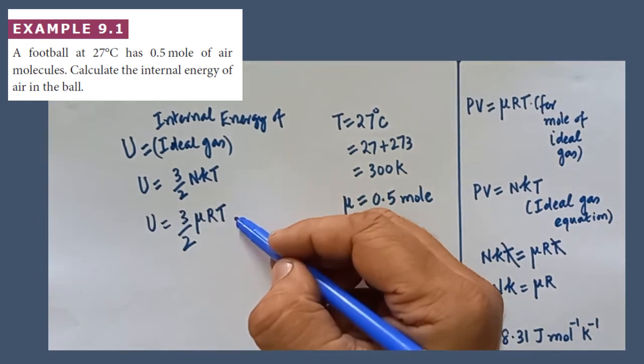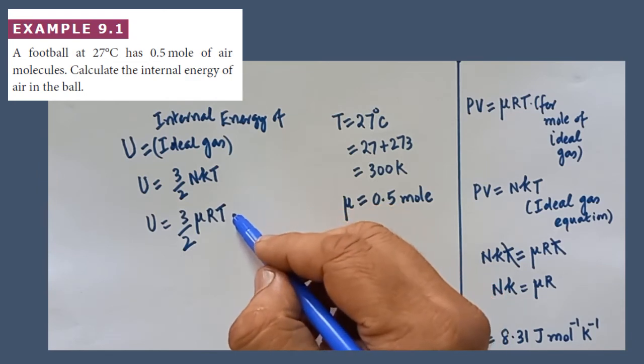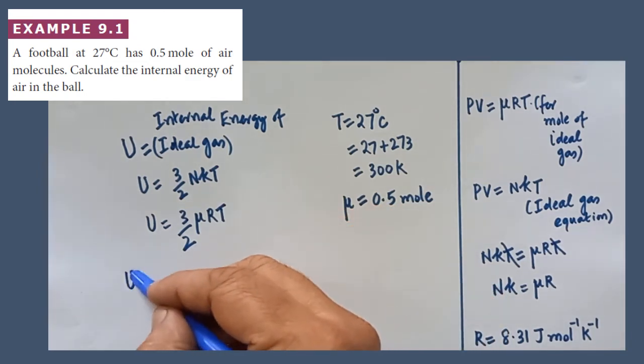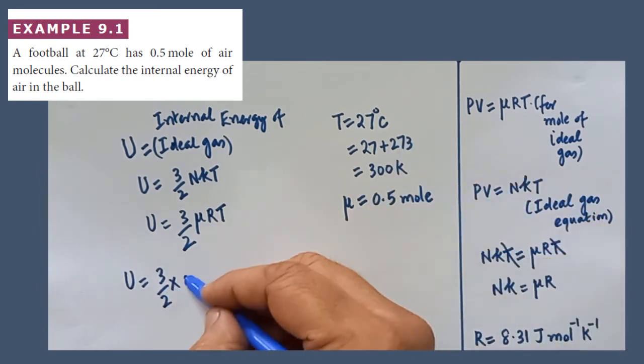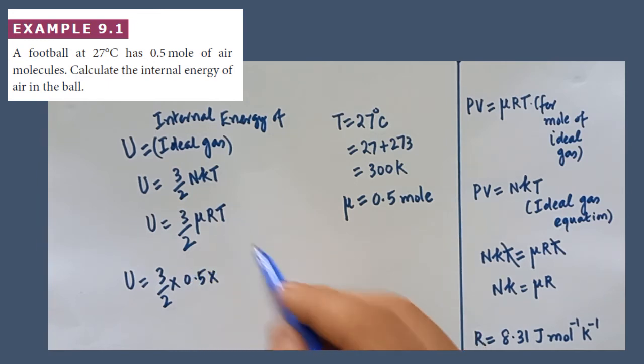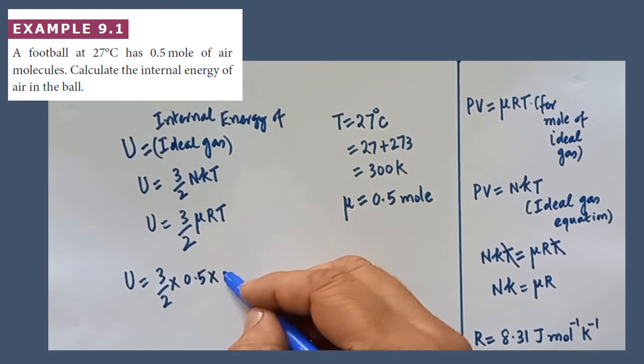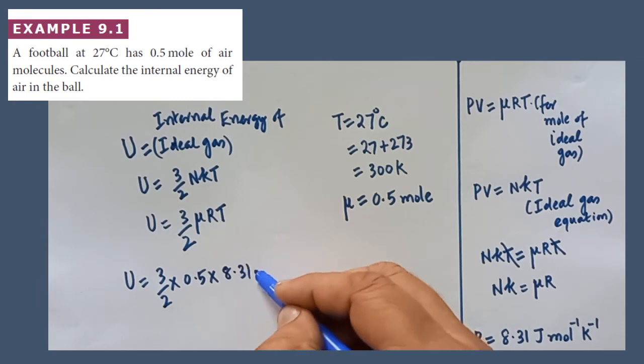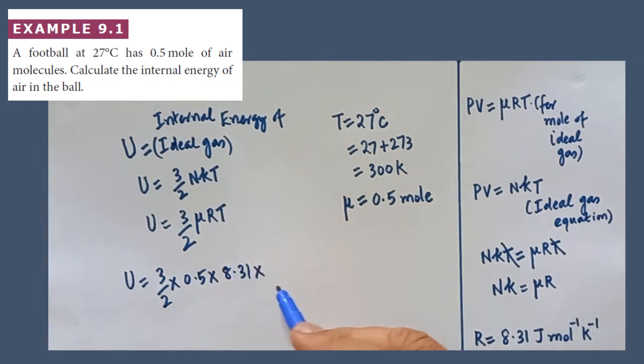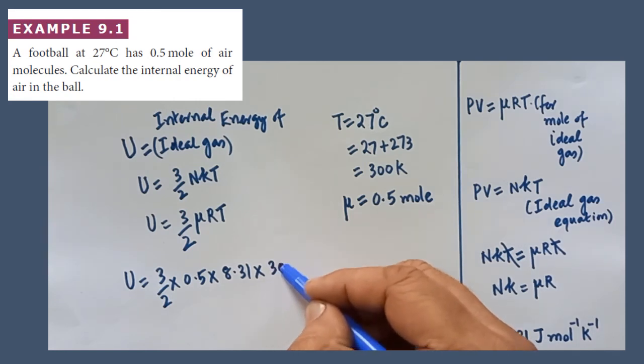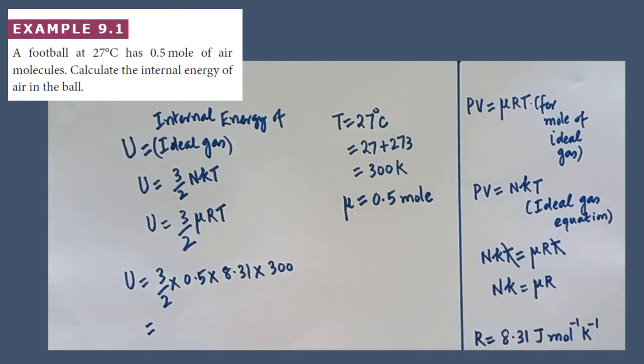So now we have got a new formula. By using this formula, we have to find out the internal energy. Substitute the values. U is equal to 3 by 2 into μ. How many moles are given? 0.5 moles. And then R, universal gas constant is 8.31 joule mole inverse kelvin inverse. And then what is T? Temperature is already converted in terms of kelvin, 300 kelvin. So multiply everything, you will get 1869.75 joule.